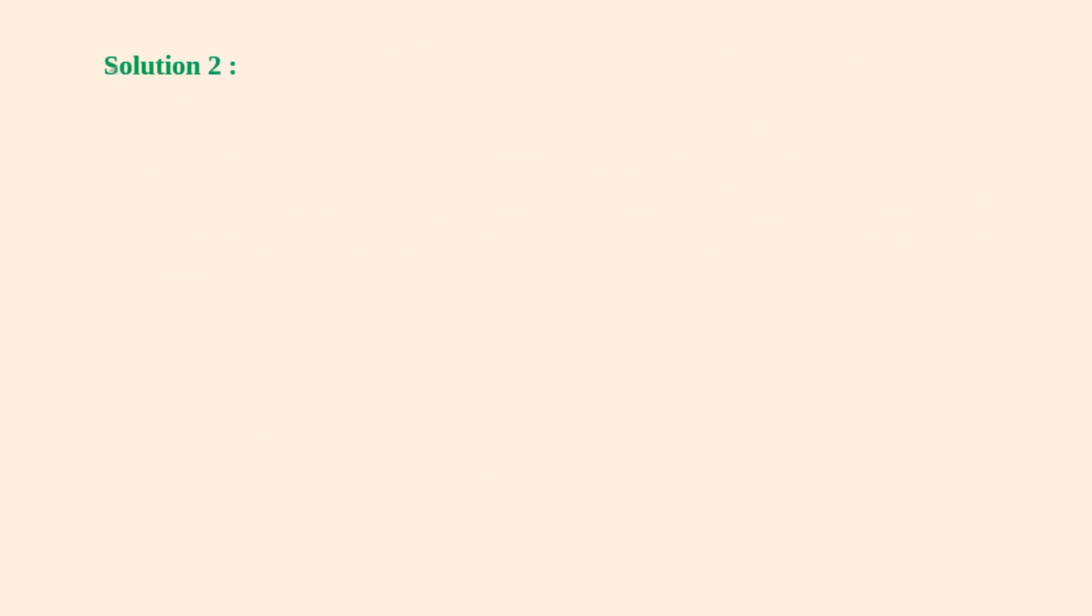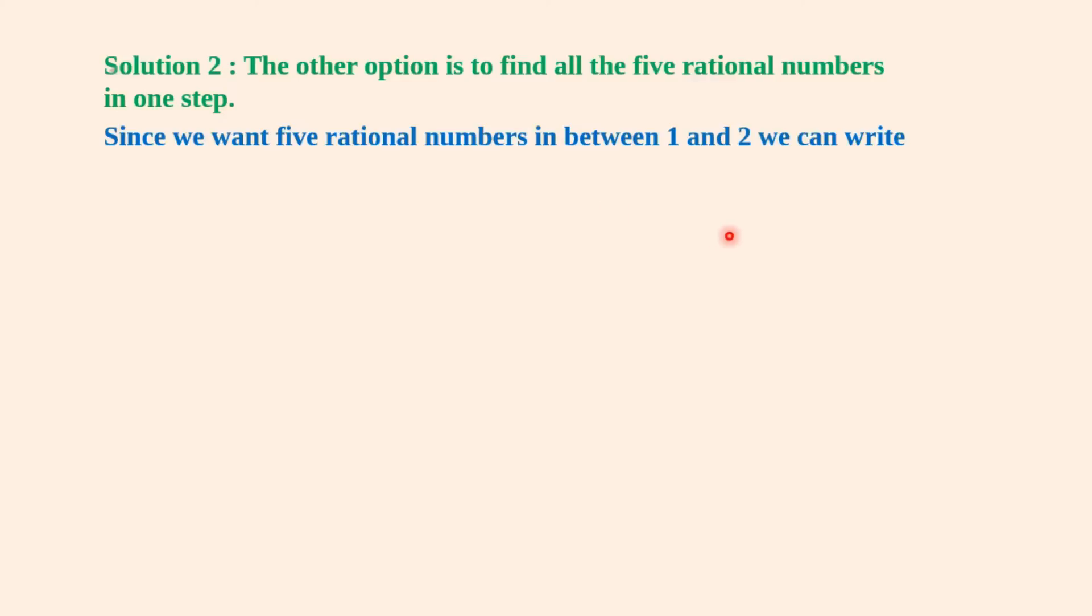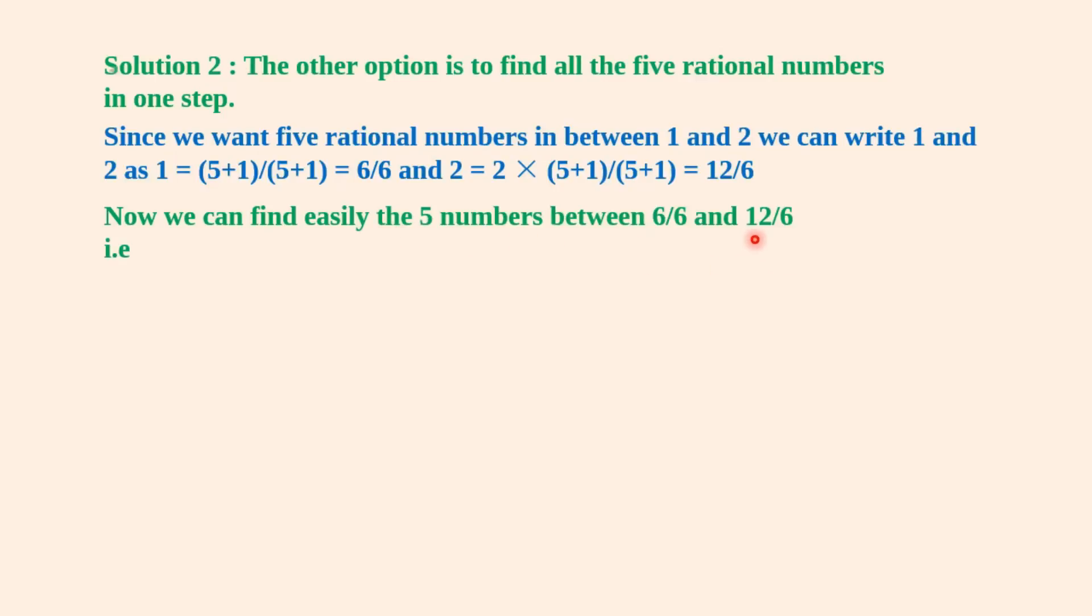Solution 2: The other option is to find all the five rational numbers in one step. Since we want five rational numbers between 1 and 2, we can write 1 and 2 as: 1 = (5+1)/(5+1) = 6/6 and 2 = 2(5+1)/(5+1) = 12/6. Now we can find easily the 5 numbers between 6/6 and 12/6.